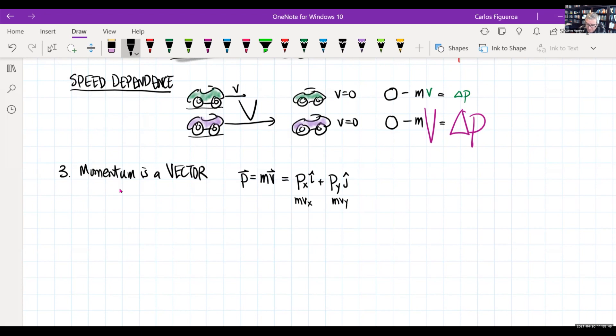If we want the magnitude of the momentum, we have to go in and we have to look at its components. If we want the direction of the momentum, we have to take the inverse tangent of the y over the x. So it's a vector. And that actually complicates things when we get to the conservation law.